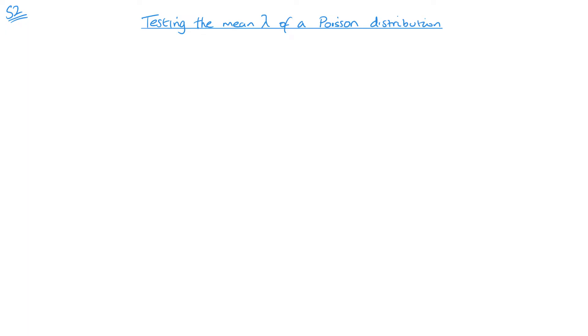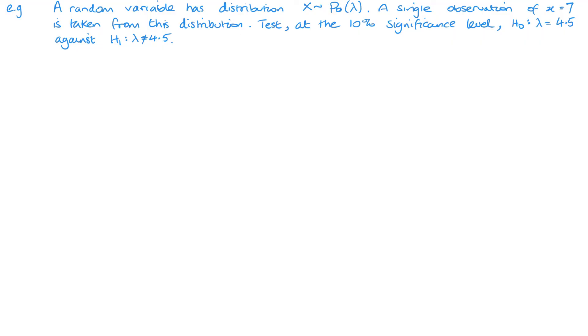So first, let's look at a straightforward example. We've got Poisson distribution as told in the example: x is 7, that's our observed value, testing at the 10% significance level, and we've got our two hypotheses so H0 and H1.